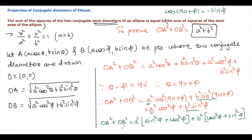Now the answer is clear. Since sin² φ + cos² φ = 1, we get OA² + OB² = a²(1) + b²(1) = a² + b². This completes the proof that OA² + OB² = a² + b².